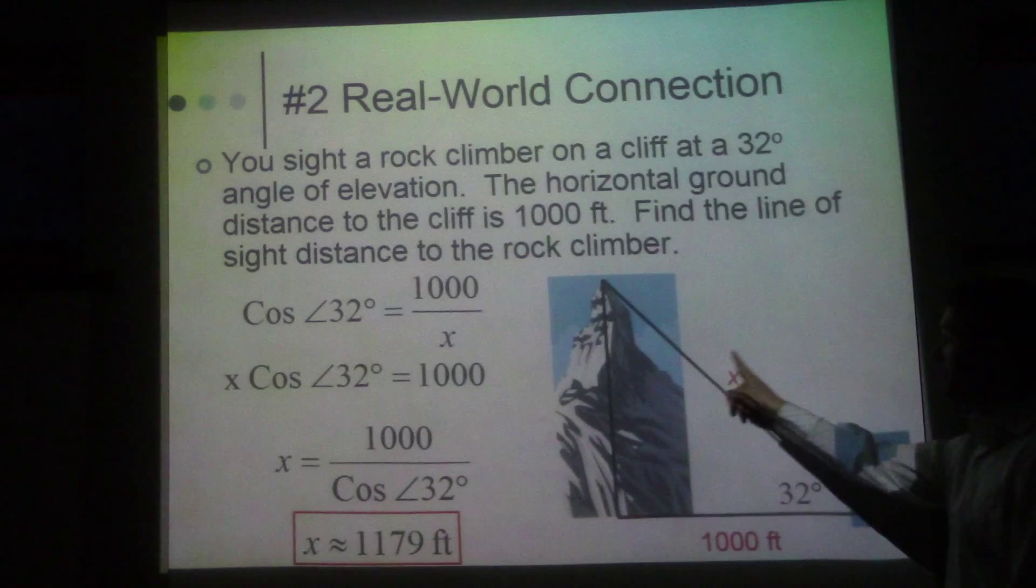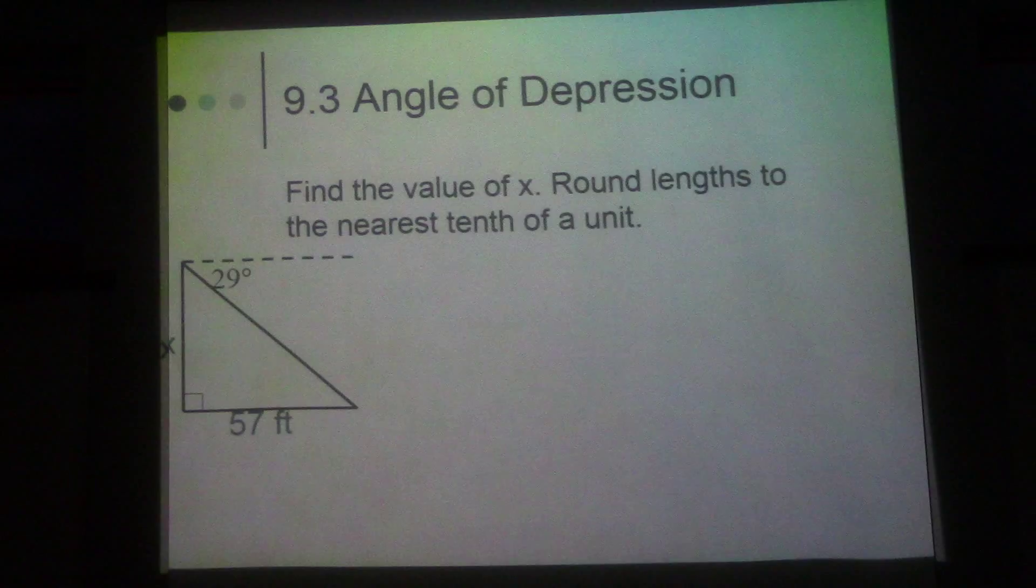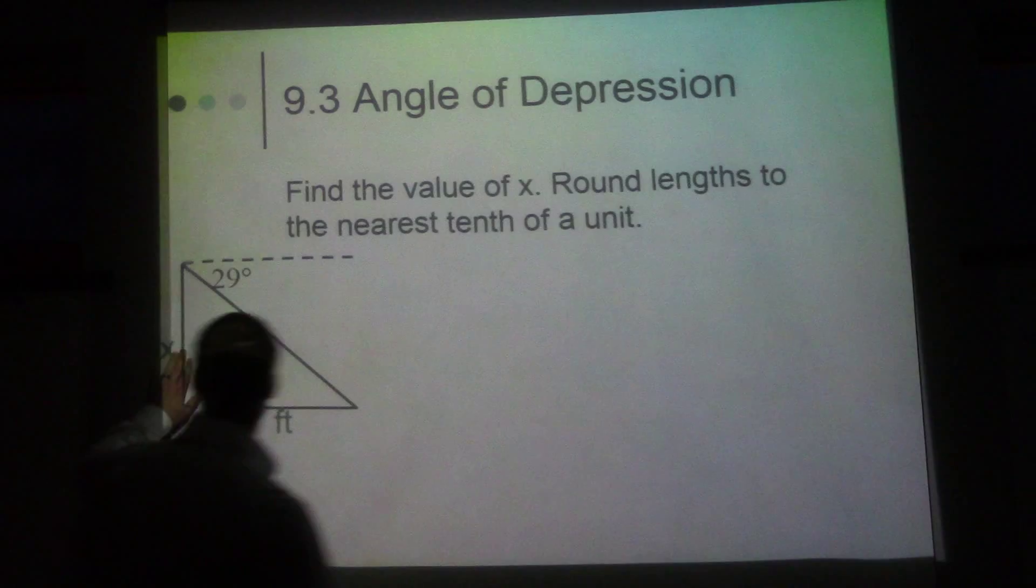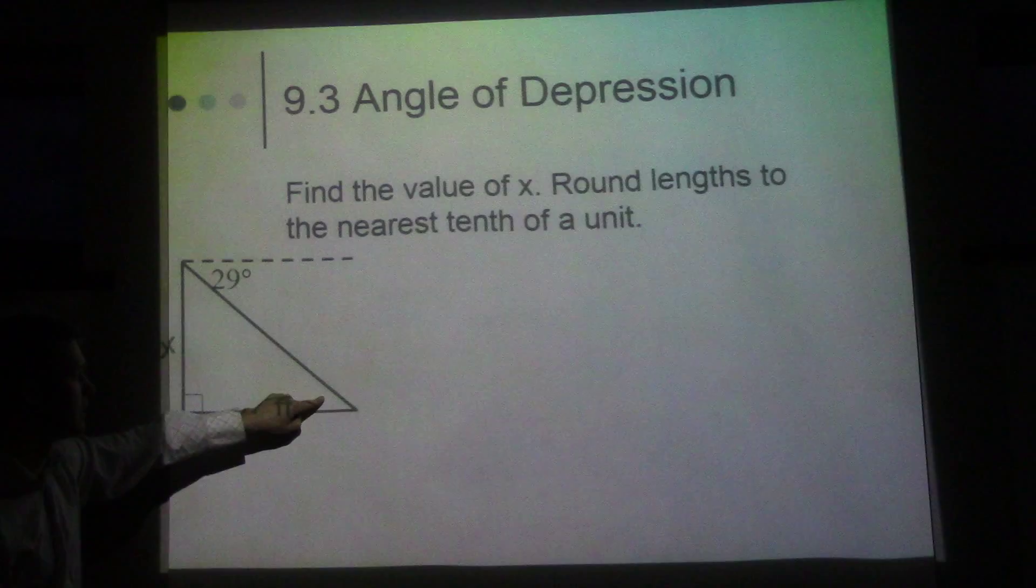Find the line of sight distance to the rock climber. So what's the distance from here to here? Your line of sight, so you looking at it. That's what we want to find. Well, if you look at this, you have this angle right here, this would be adjacent over the hypotenuse. So adjacent over hypotenuse is cosine. So we'd say cosine of 32 degrees equals adjacent over hypotenuse, and then we solve from there. So just a reminder going back over yesterday's lesson.